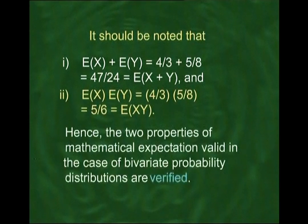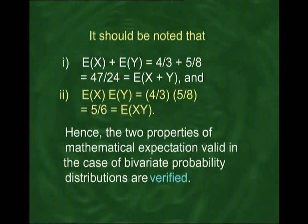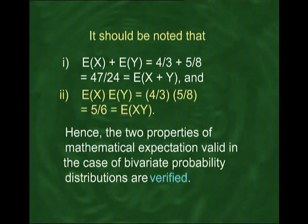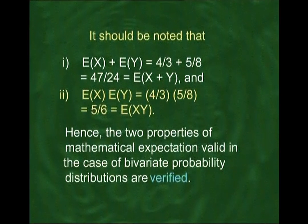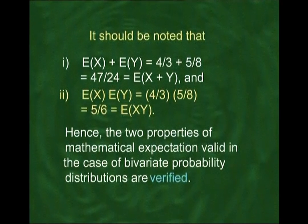Hence, E(X) + E(Y) = E(X+Y), and because X and Y are independent in this example, E(X)·E(Y) = E(XY). Both properties of mathematical expectation are confirmed for the continuous bivariate distribution.